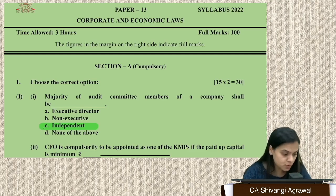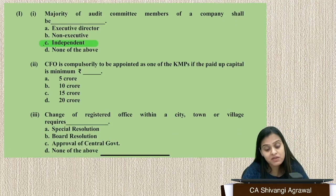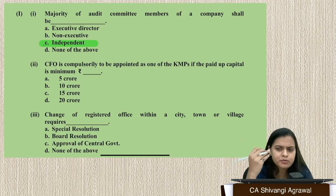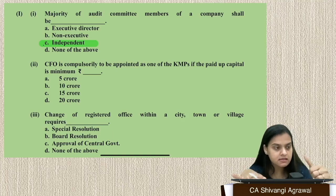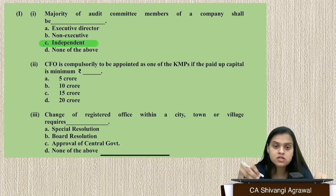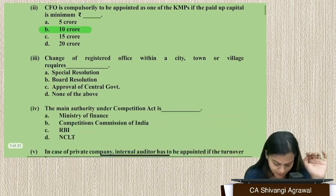Question 2: CFO is compulsorily required to be appointed as one of the KMPs if the paid-up capital is minimum how much? Under Section 203 and Rule 8, listed companies and public companies with paid-up capital of 10 crore or more shall have whole-time KMP — and CFO is included in whole-time KMP. So the correct answer is 10 crore, Option B.